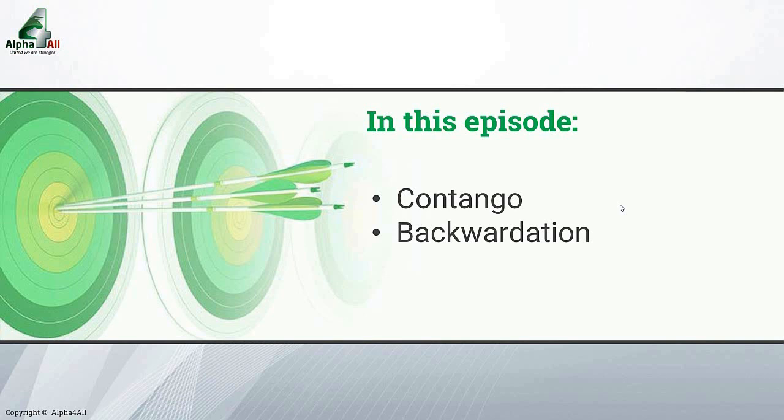As you are probably aware, in most cases, futures with different maturities have different prices. In commodities, most frequently, the price of the closest future is lower than those of the further dated ones. This situation is the norm and is referred to as contango.